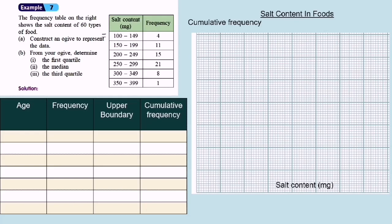For the first row, 100 to 149, the frequency is 4. But to construct an ogive, we need to start with frequency 0. So I will write class interval 100 to 149 in the second row.